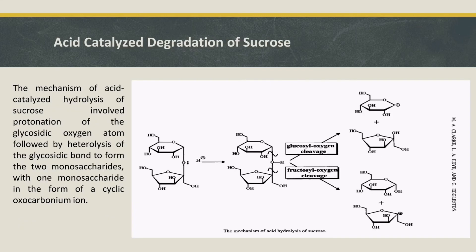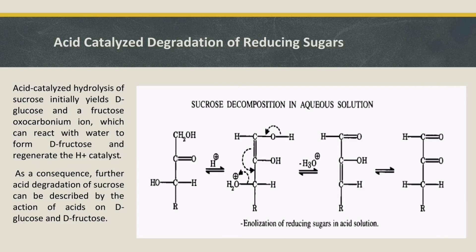Regarding acid-catalyzed degradation of sucrose, from the picture attached it is very easy to understand the mechanism. The mechanism of acid-catalyzed hydrolysis of sucrose involves protonation of the glycosidic oxygen atom, followed by protonation of the glycosidic bond to form the two monosaccharides, with one monosaccharide in the form of a cyclic oxocarbonium ion.